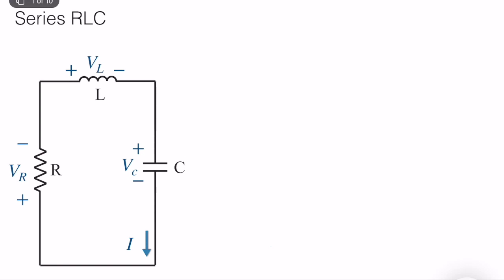In this video lecture we will analyze a different second order circuit and solve it numerically. This is a series RLC circuit — different from the previous one. It's in a single loop with a resistor, inductor, and capacitor. They all have different voltages, but the current I is equal for all: I equals I_L equals I_C equals I_R. We let V_C equal V, and we will find the ODE with respect to the capacitor voltage.